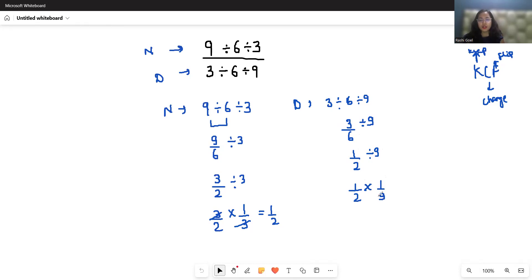So this gives us 1 by 18. So our numerator is 1 by 2 and our denominator is 1 by 18. So if we have four terms in a fraction, you have to multiply the inner ones together and the outer ones together.